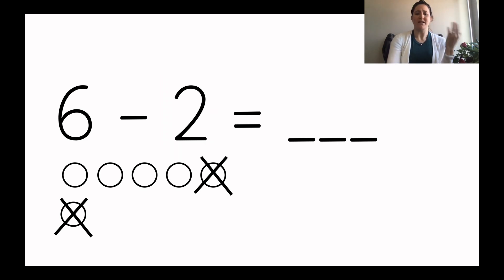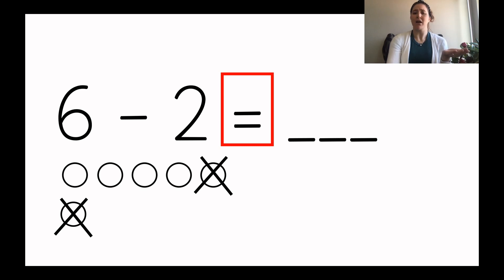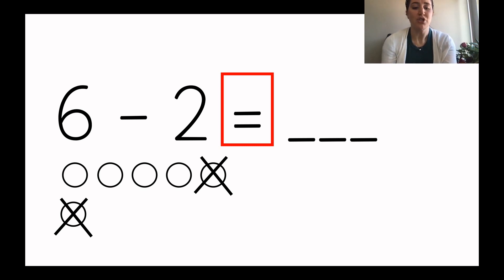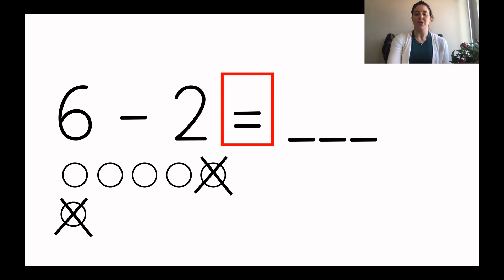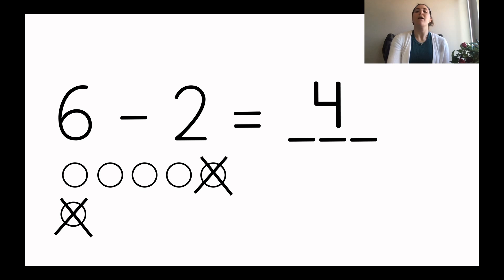Now what does that equal? I need to count how many are left. There are one, two, three, four left. So six minus two equals four.